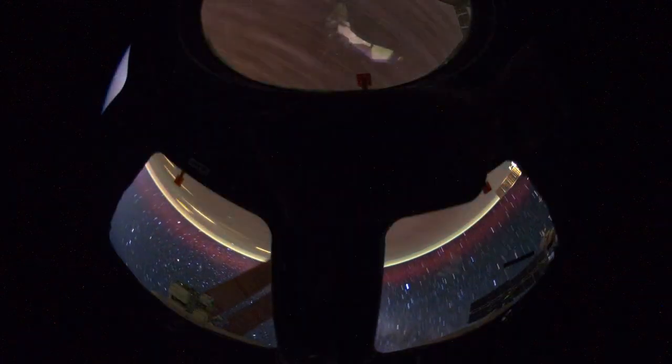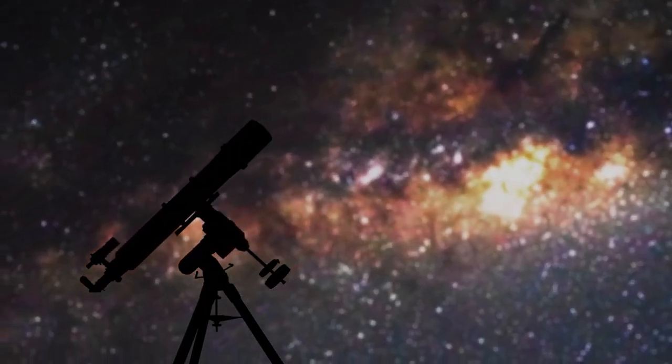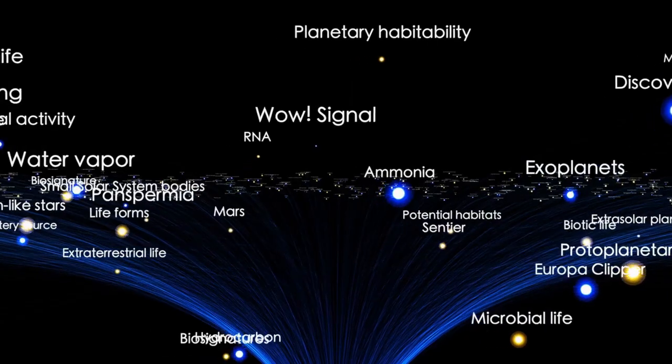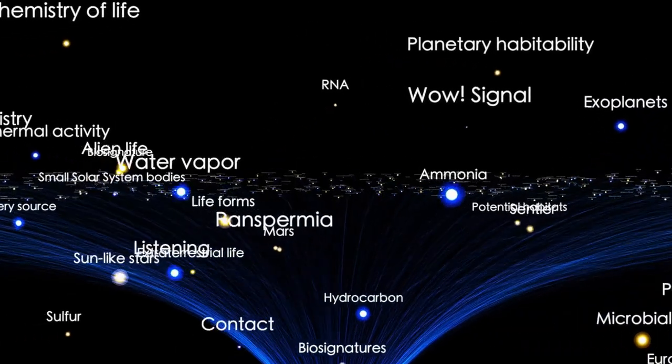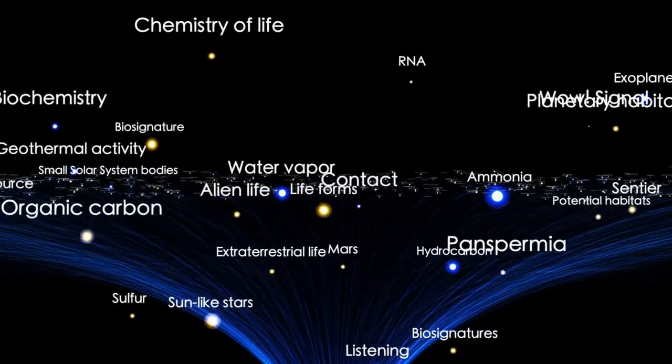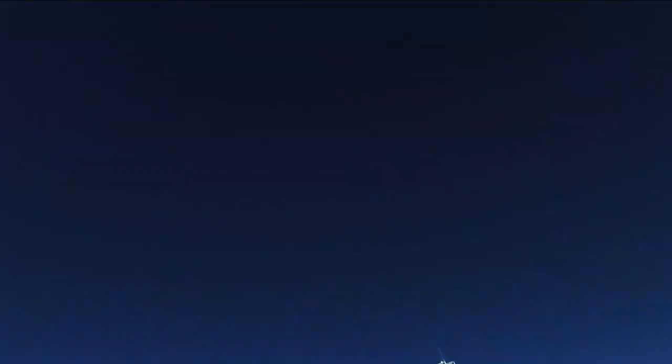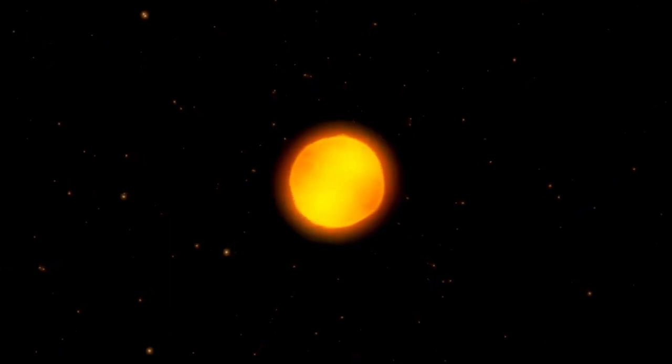Although Betelgeuse has since returned to its normal brightness, the incident was a reminder that stars are not fixed points of light but constantly changing systems governed by fusion, gravity, and radiation. In red supergiants like Betelgeuse, this instability is particularly intense, making them highly variable and unpredictable.